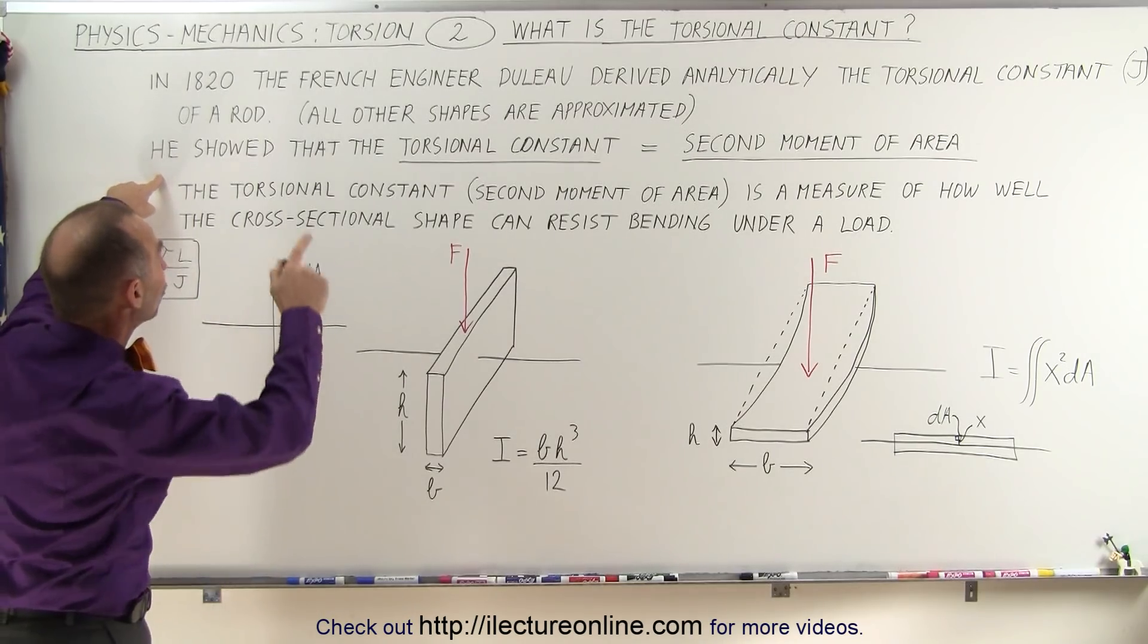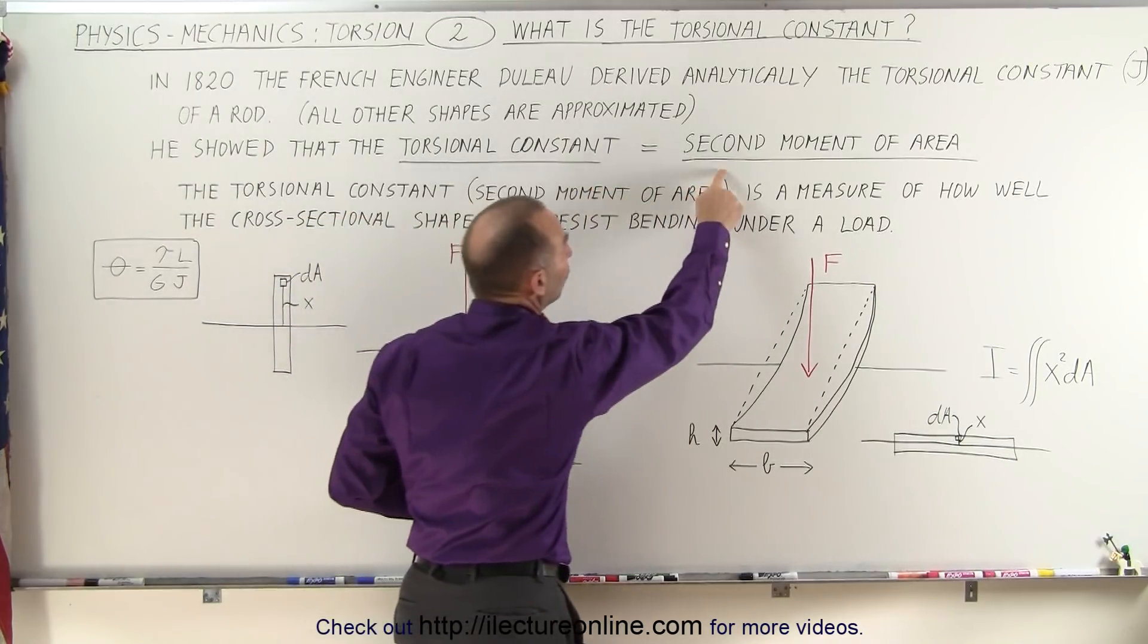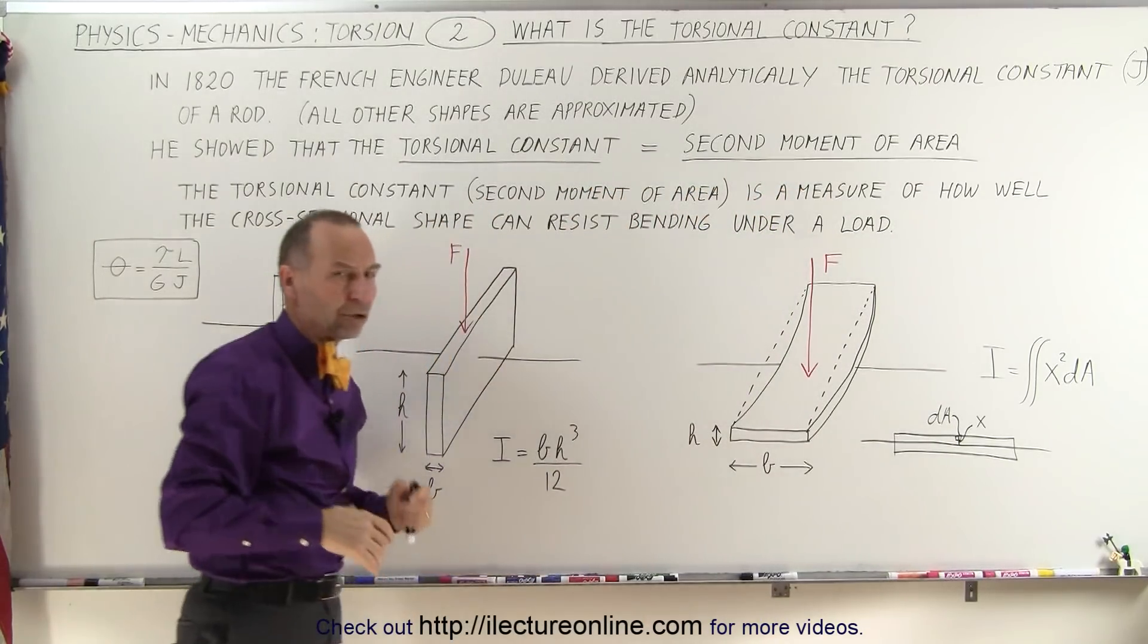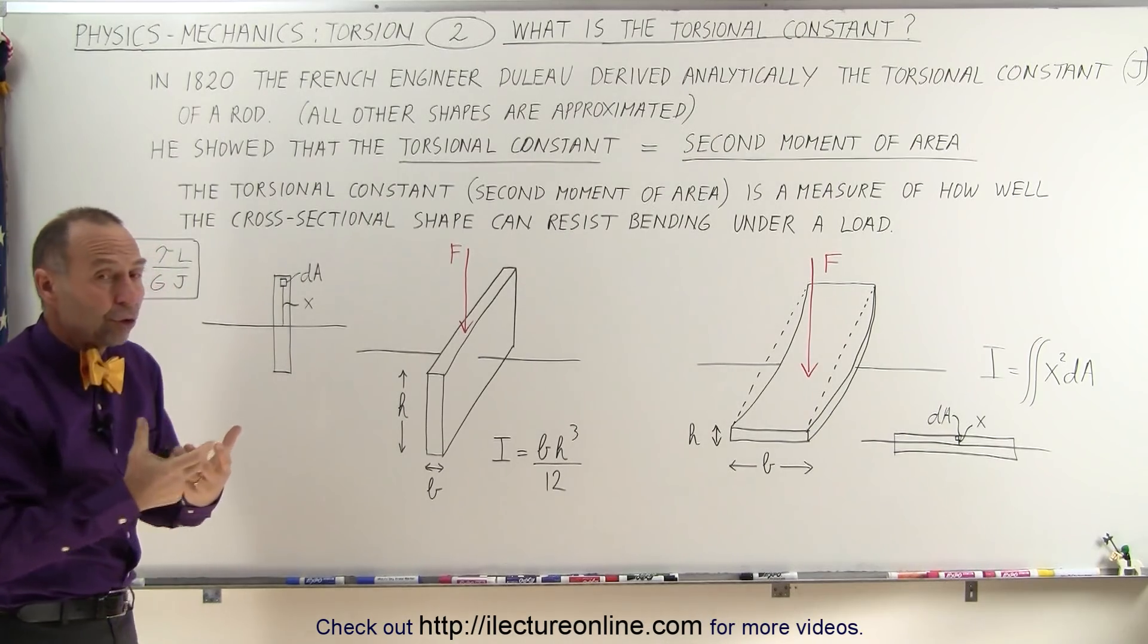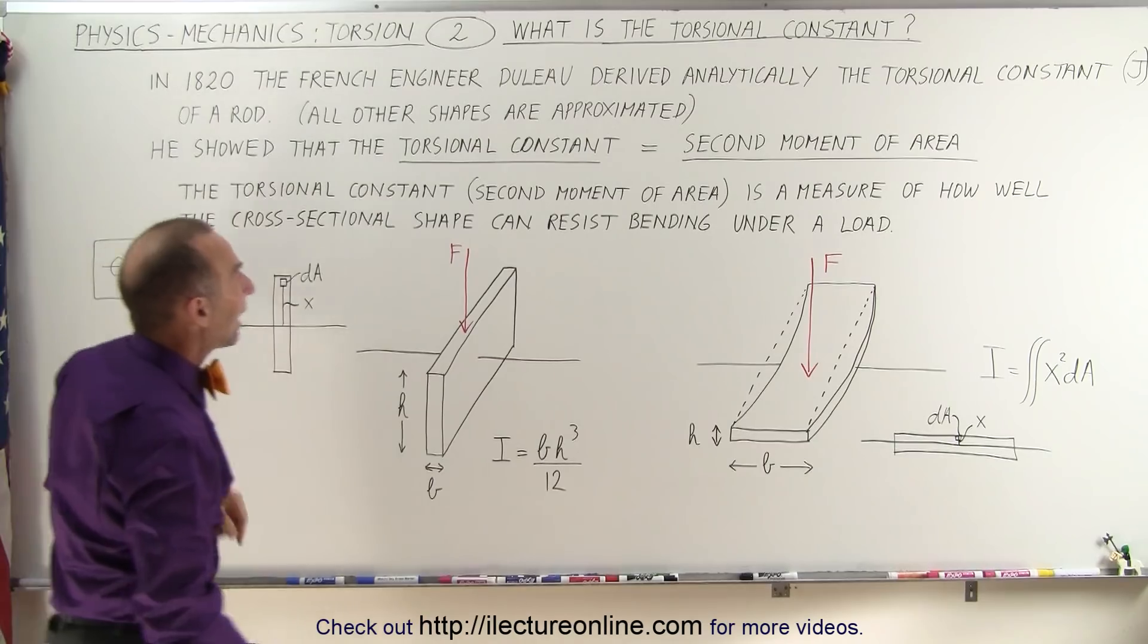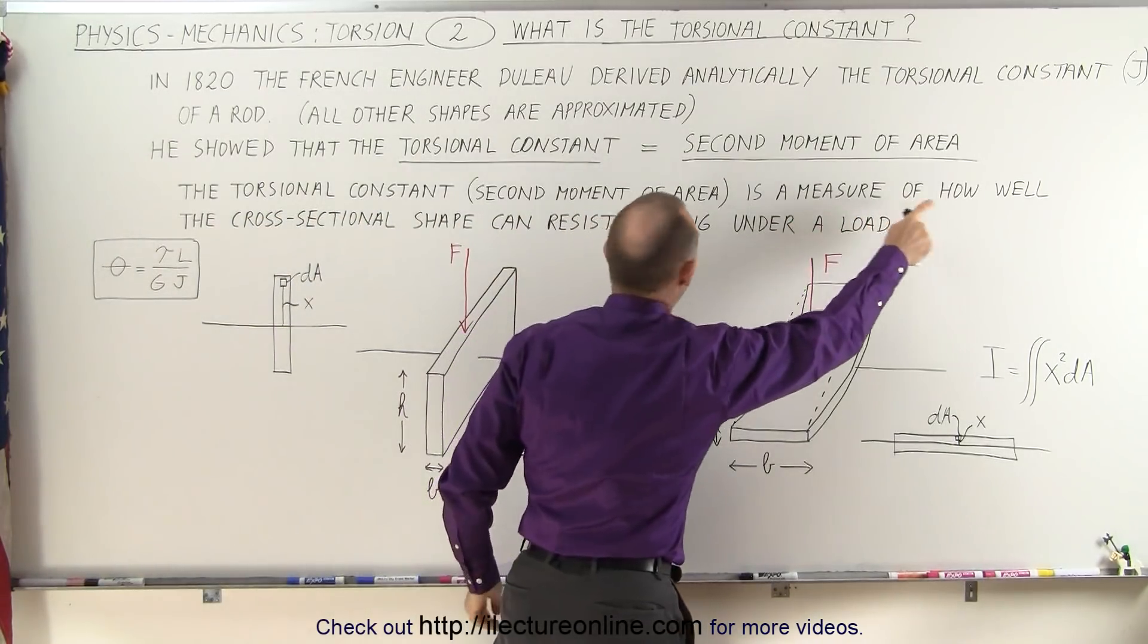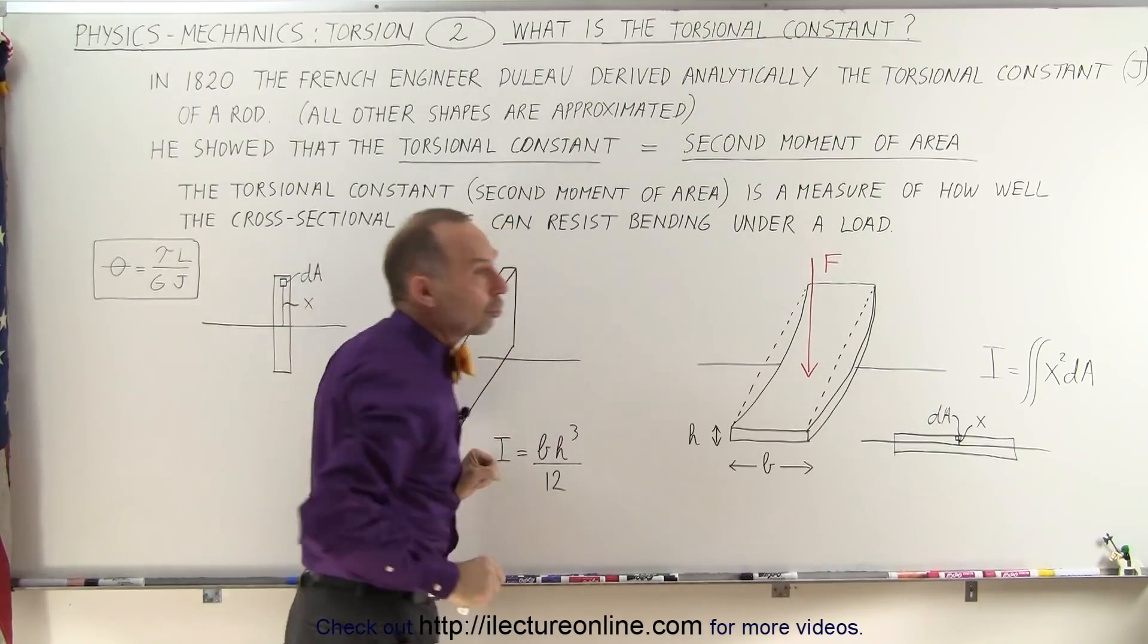Notice that we can define the torsional constant, which, by the way, is also called the second moment of area. And we'll talk about that a little bit later as well. But the torsional constant, or the second moment of area, can be defined as a measure of how well the cross-sectional shape can resist bending under load.